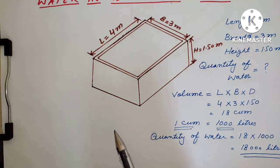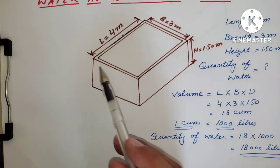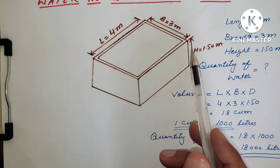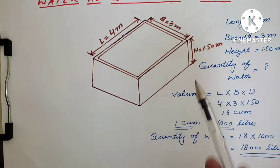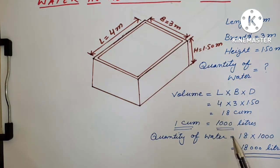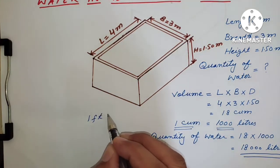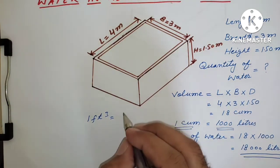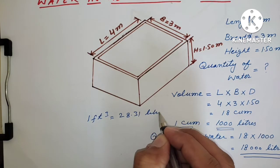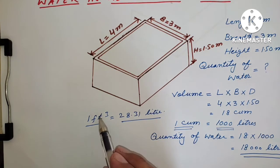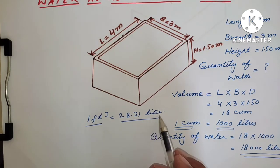Similarly, you can calculate in feet. If the dimensions are in feet — for example, 3 feet by 6 feet and height is 2 or 3 feet — we will calculate the capacity of water the same way. The key thing to remember is that 1 cubic foot is equal to 28.31 liters. First calculate the volume in cubic feet, then multiply by 28.31 liters to get the capacity in liters.